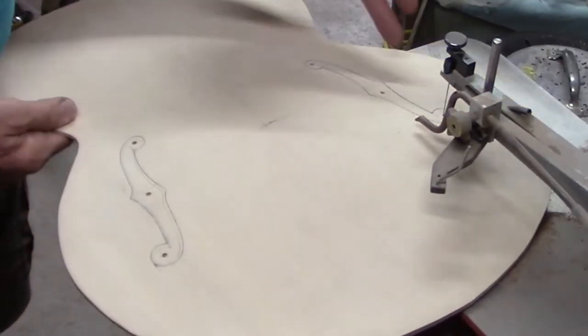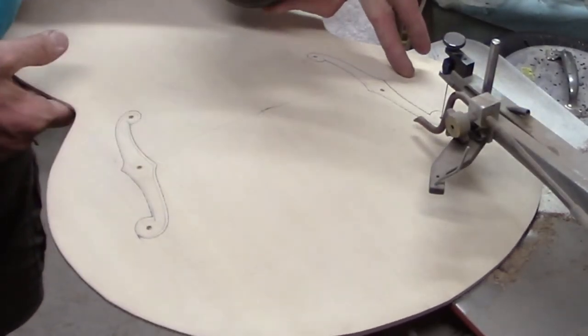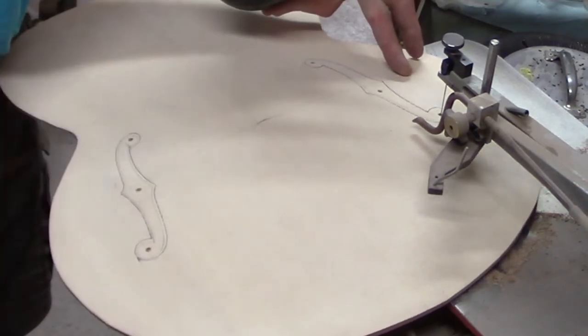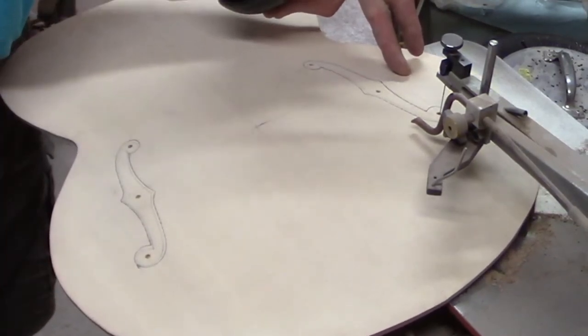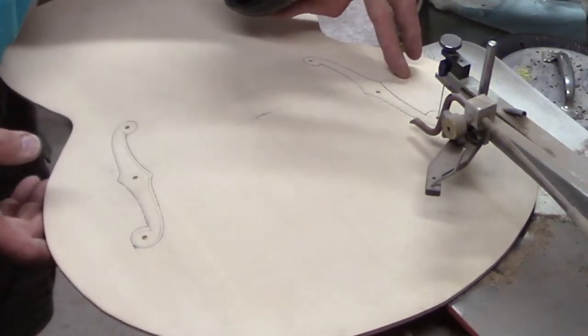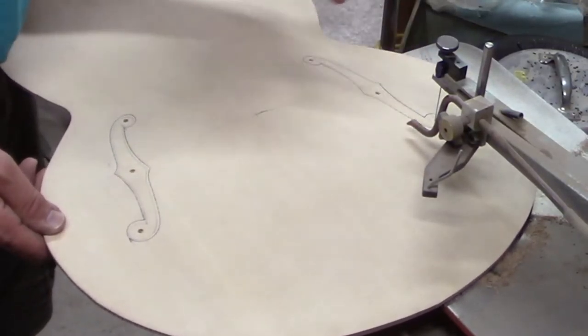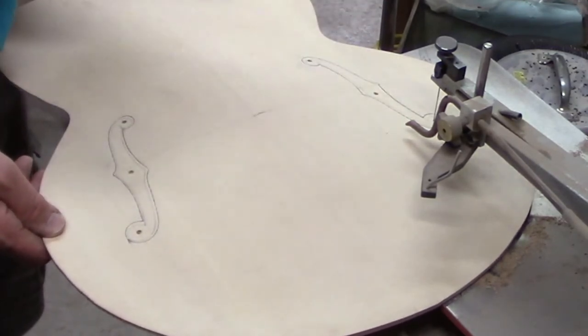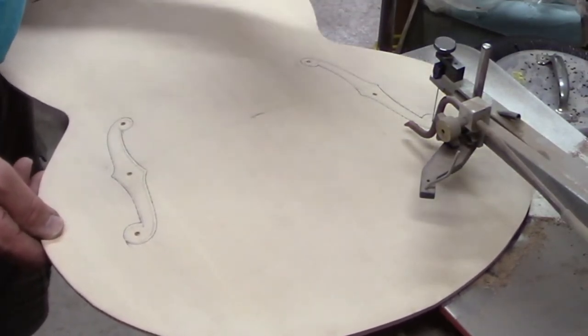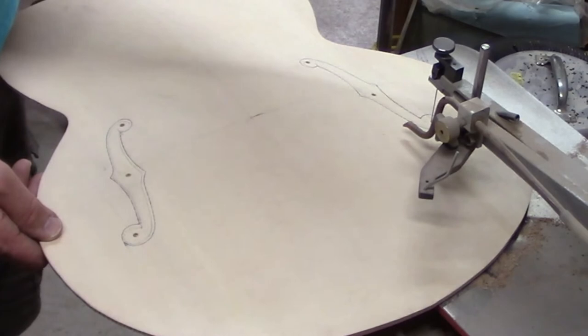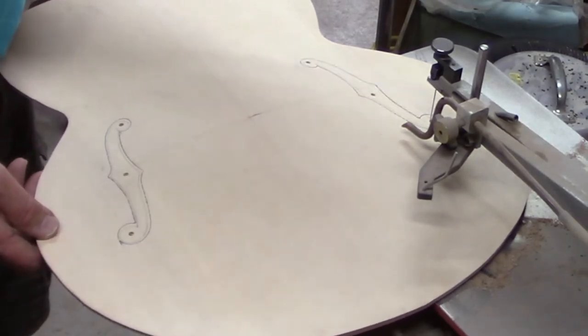The F holes may look a little wide, and they are to begin with, but they're going to have three layers of binding on them. So once the thickness of the binding is taken into account, these will be pretty much the size of the F holes that I want for this particular guitar.